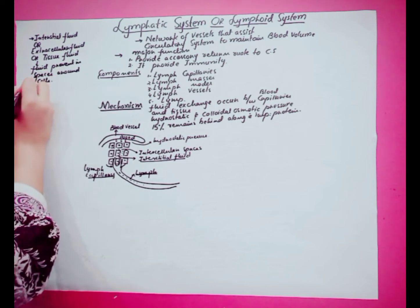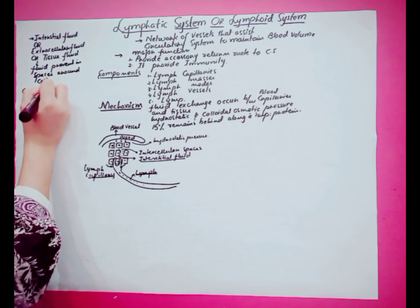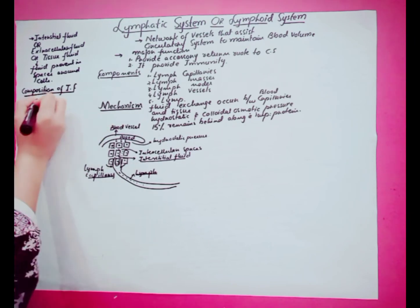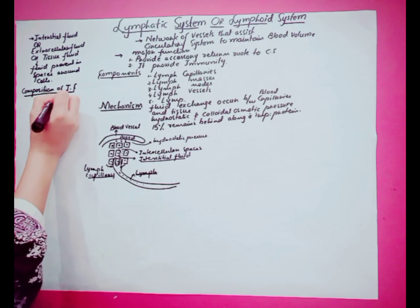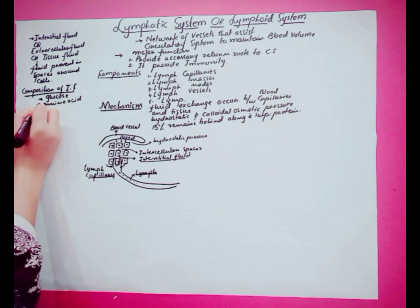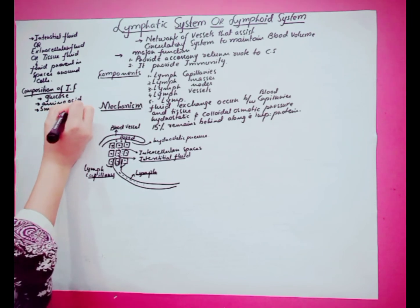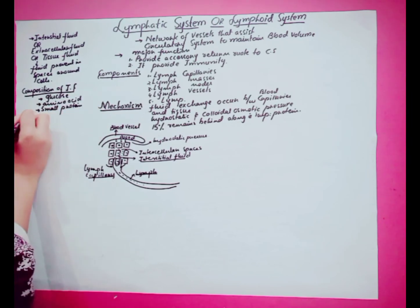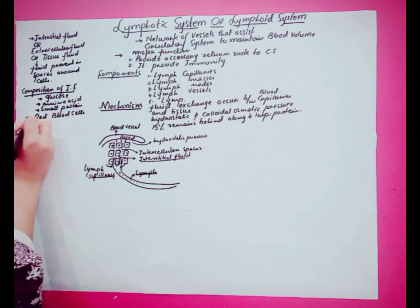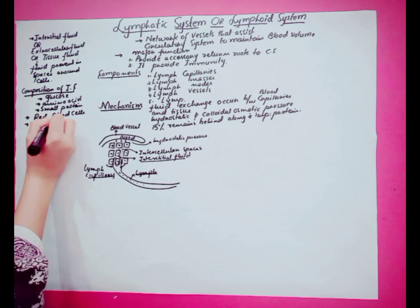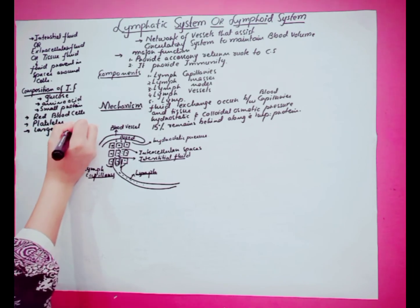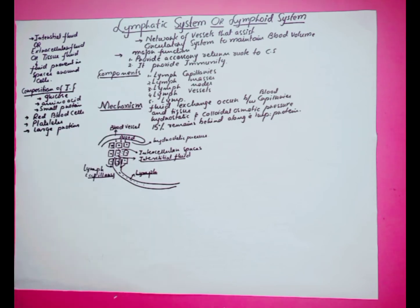Here we should discuss the composition of interstitial fluid. Interstitial fluid contains glucose, amino acids, and small proteins. However, interstitial fluid does not contain red blood cells, platelets, and large proteins. This is the difference between the fluid in the blood vessel and the fluid present between the cells.